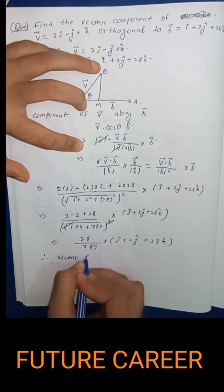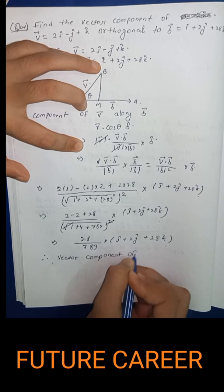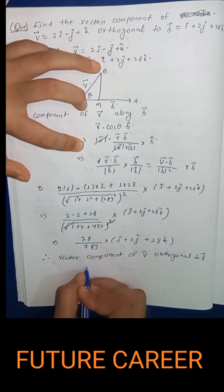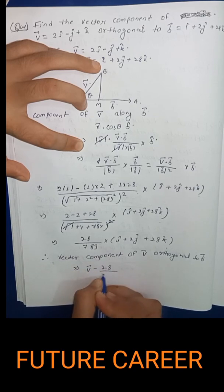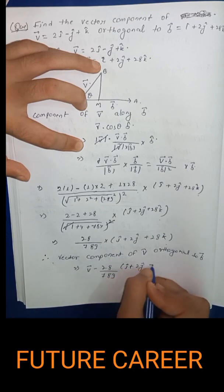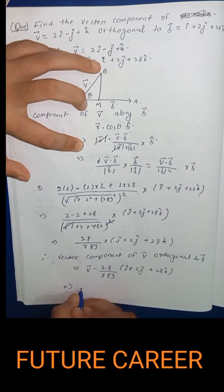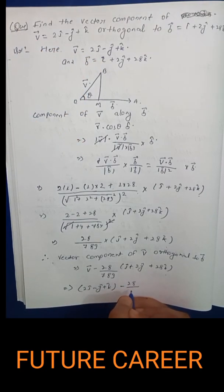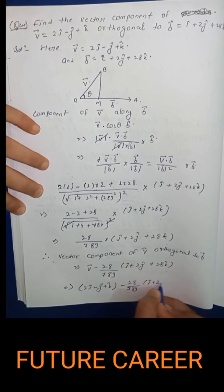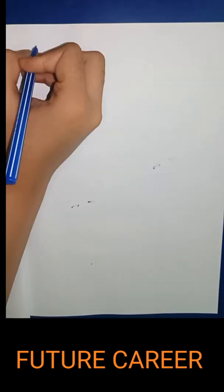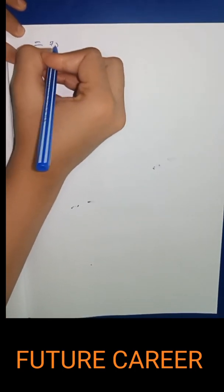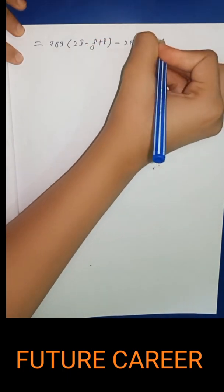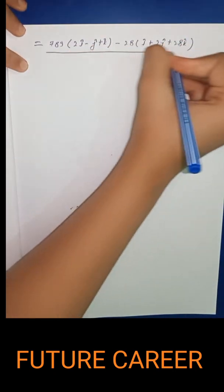The vector component of v vector orthogonal to b vector is v vector minus the projection: v vector minus 28 upon 789 into (i cap plus 2j cap plus 28k cap). This equals 2i cap minus j cap plus k cap, minus 28 upon 789 into (i cap plus 2j cap plus 28k cap).